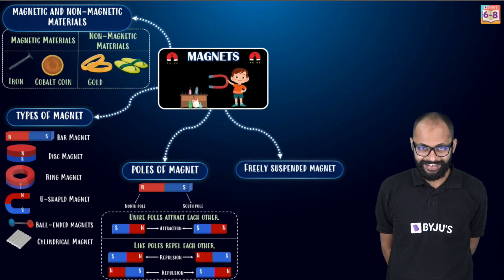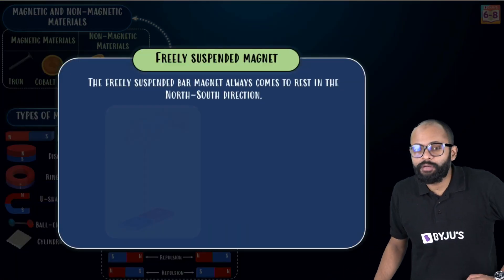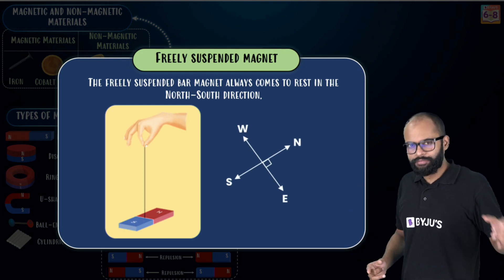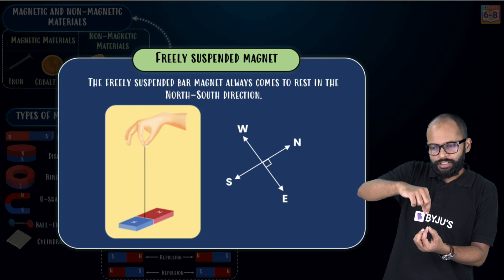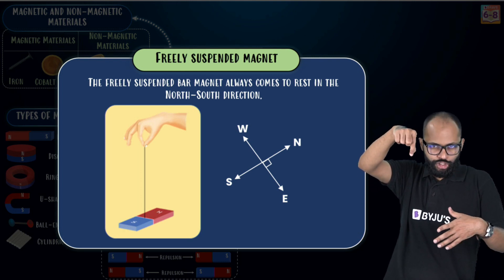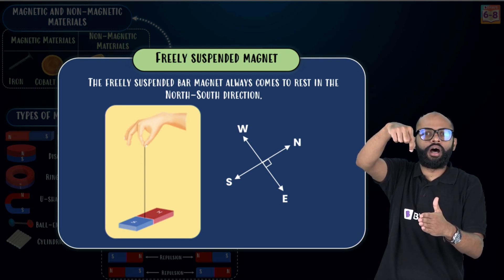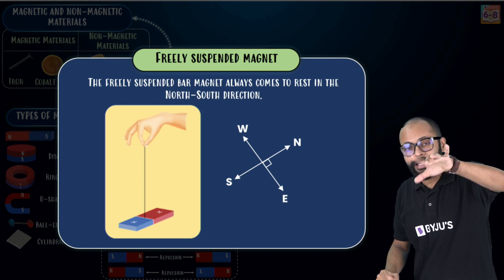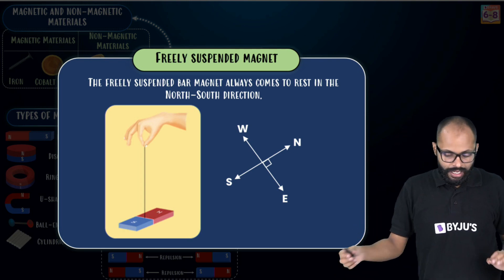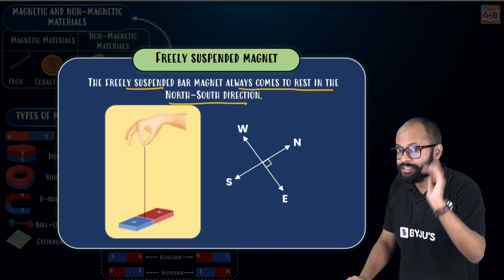Next is another very important property which we have been using from generations. Freely suspended magnet. If you take a magnet, let's be specific, if you take a bar magnet and you tie it using a thread from the middle and give a slight push, what will happen? It will rotate, rotate, rotate, rotate. Then it will settle down in one direction and this will happen again and again and again. Means there is something special. Yes. A freely suspended bar magnet always comes to rest in the north-south direction.